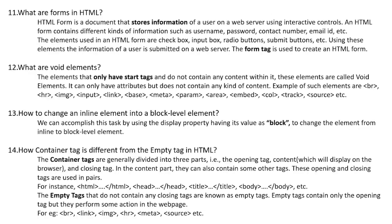Question 11: What are forms in HTML? An HTML form is a document that stores information of a user on a web server using interactive controls. HTML forms contain different kinds of information such as username, password, contact number, email ID, etc. The elements used in an HTML form are checkbox, input box, radio buttons, submit buttons, etc. Using these elements, the information of a user is submitted on a web server. The form tag is used to create an HTML form.